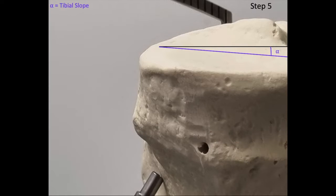This is our tibial slope. Considering the triangle ABC, we can determine that the gamma angle is equal to 90 degrees minus the tibial slope.